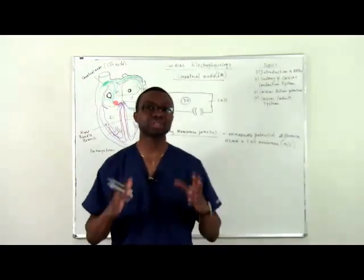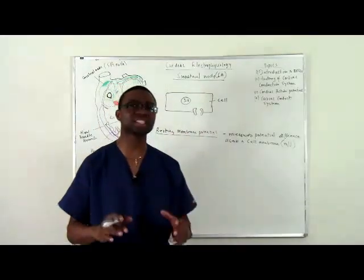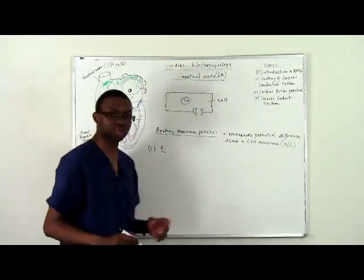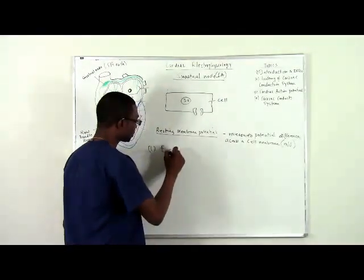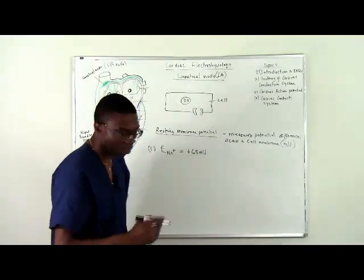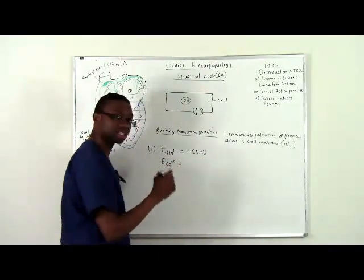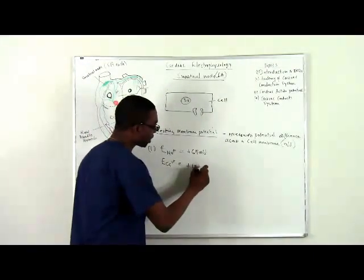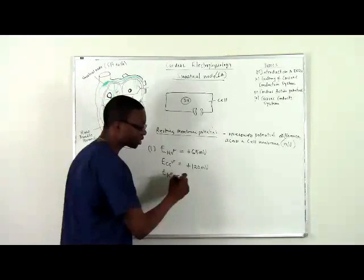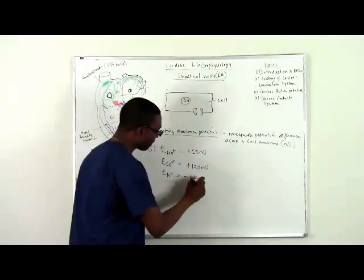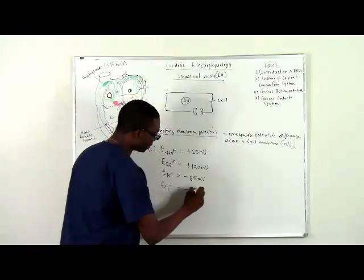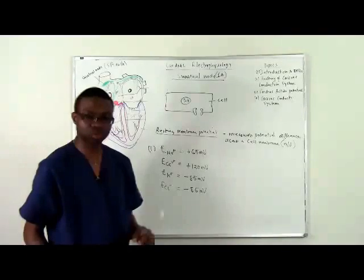Let's take a look at the resting membrane potentials of some ions. We're going to use E as the symbol for resting membrane potential. Sodium has a resting membrane potential of positive 65 millivolts, calcium has positive 120 millivolts, potassium has negative 85 millivolts, and the last anion we'll talk about is chloride, which also has a resting membrane potential of negative 85 millivolts.